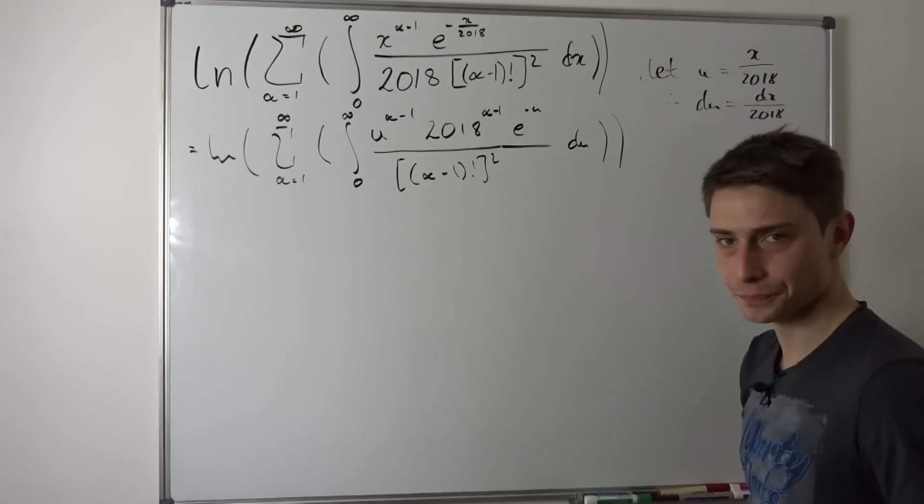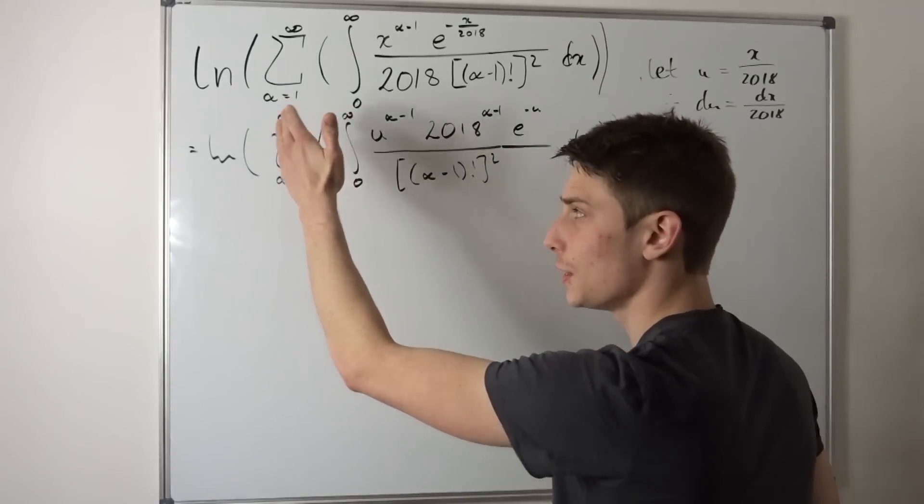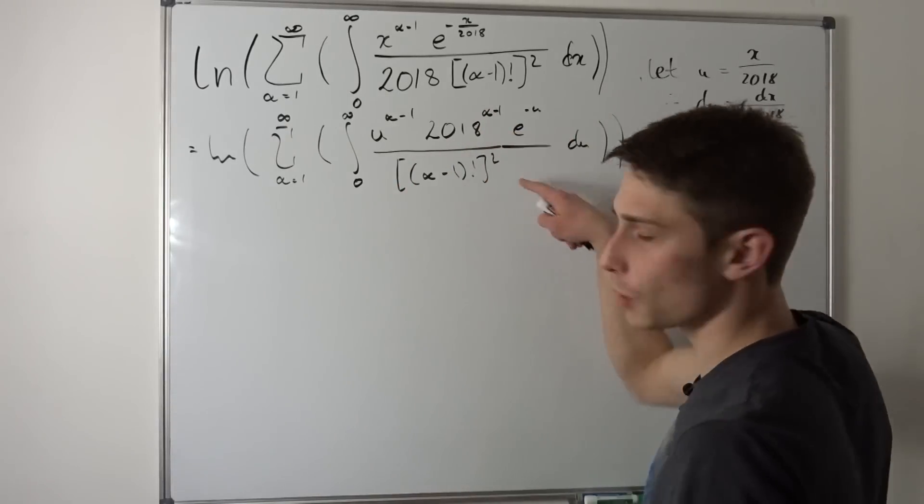Okay, great thing. And now we got some constants which we can bring in front of the integral. We can bring it here to the front because those are dependent of alpha in this case. So those two are constants. We can bring it to this spot right here.